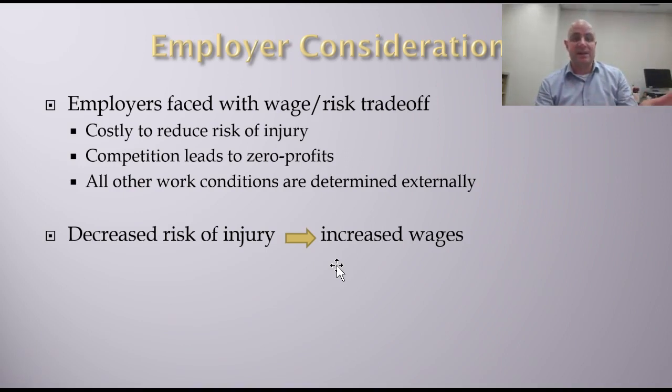Now let's move to the employer side. Employers are faced with a wage-risk trade-off because it's costly to reduce the risk of injury. For example, at a construction site it costs money to give people proper training, proper equipment like hardhats and gloves. It costs more money to have one person operating a crane and another observing. These all make the job site safer but become more expensive, so if it's more expensive they would have to pay less.